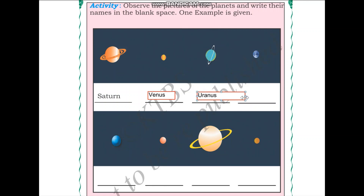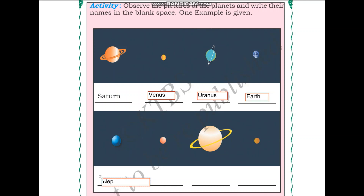This planet is very familiar to us — it is our own planet, Earth. Next, we can see the bright blue planet. This one is Neptune. Next, we have a red planet, so this planet is Mars because we know Mars is the red planet.